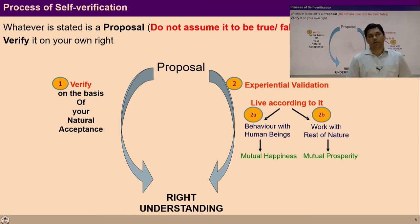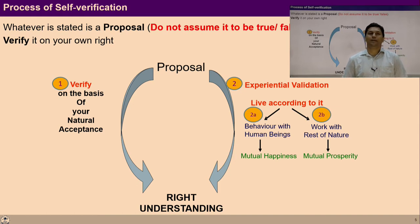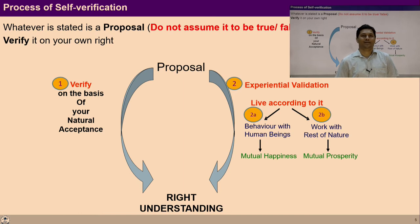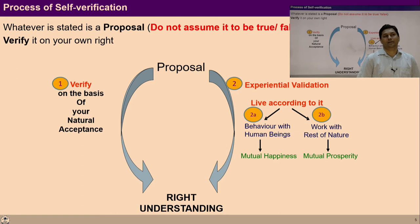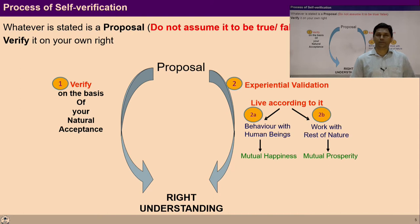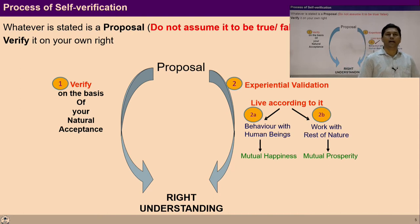We talked about natural acceptance in UHV 2 and UHV 3 in detail. There is an innate faculty in you which you can refer to at any time. This natural acceptance is innate in us — it is intact, invariant, and available constantly to all of us. Because it is uncorrupted and invariant, throughout this UHV course we keep referring to natural acceptance again and again.